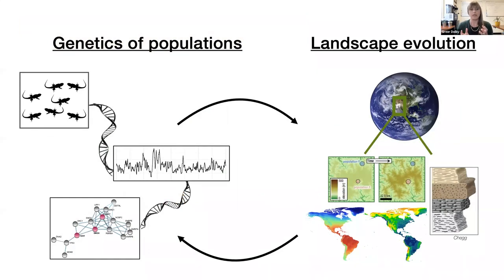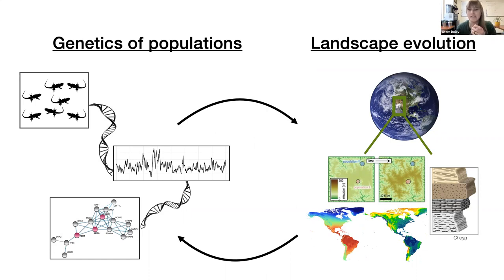What my group does is basically study and try to understand that relationship or set of relationships better. To do this, we study the DNA — the genomes of organisms and individuals living on the landscape today, across all different species, though in this example I'm just showing lizards. We pair that with geological data to understand how the landscape has changed in that region over time. Then we use statistical models to try to quantitatively link those two data sets to determine specifically what parts of the landscape change over tens of thousands or millions of years led to specific evolutionary patterns that we see in the genetic data.